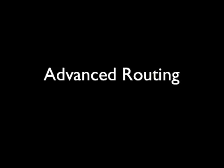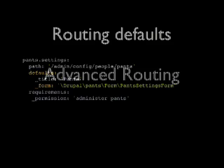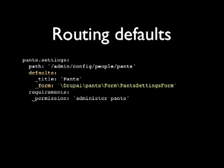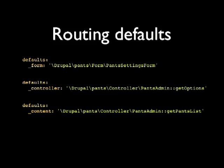That was a quick overview of the six different things. Now a little about advanced routing. The first thing is these defaults. In the example shown, underscore_form means it's a form — it has a class name after it, loads that class, and calls the buildForm method on it.